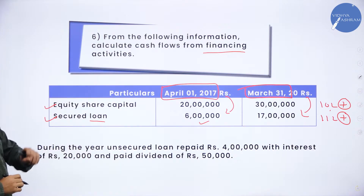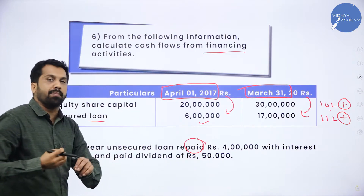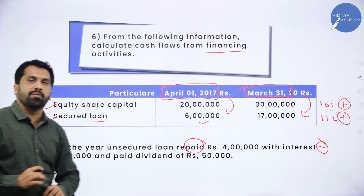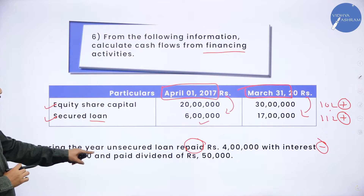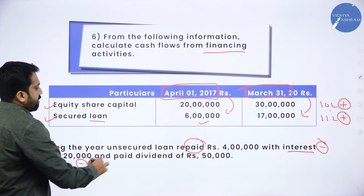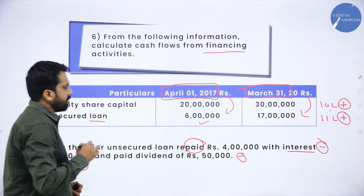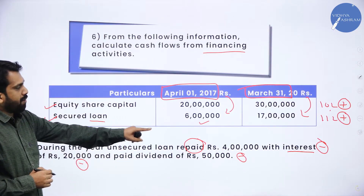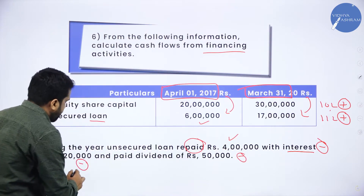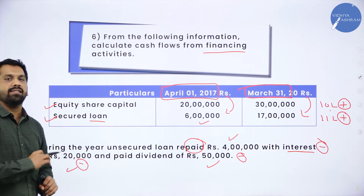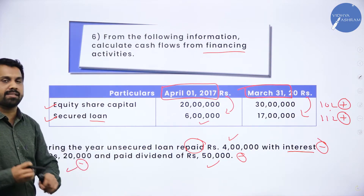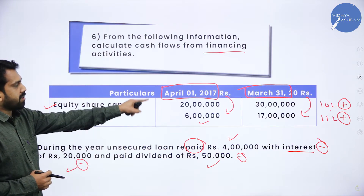During the year, unsecured loan repaid — the word 'paid' means cash outflow, which is minus. Next, interest paid of 20,000 — paid means minus. Paid dividend of 50,000 — again minus. You paid unsecured loan of 4 lakh, paid interest 20,000, and paid dividend 50,000 — these three should be subtracted. Why? Because these are called cash outflows. The two inflows — 10 lakh and 11 lakh — are cash inflows.